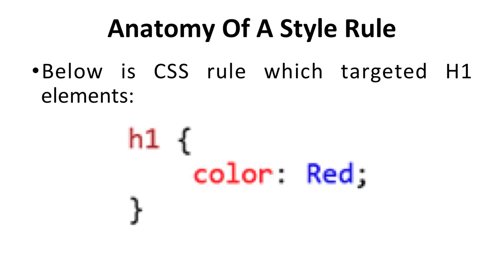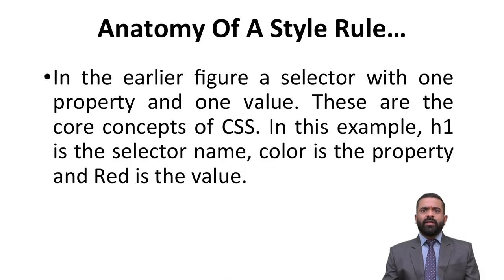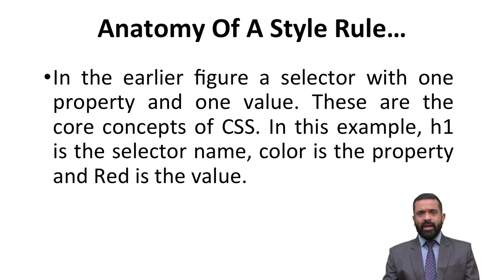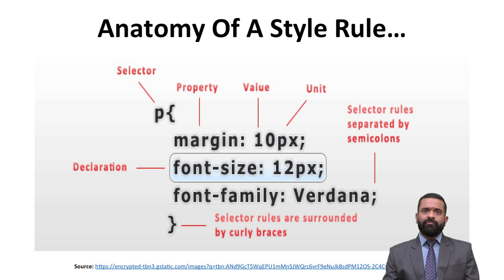Anatomy of a style rule: the CSS rule targeting h1 elements shows h1 as the selector, followed by curly braces containing the declaration where color is the property and red is the value. A selector with one property and one value represents the core concept. In the example, h1 is the selector, color is the property, and red is the value.